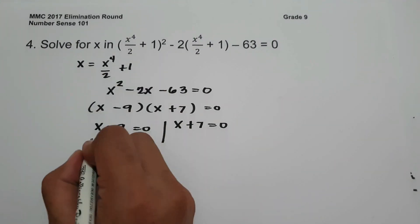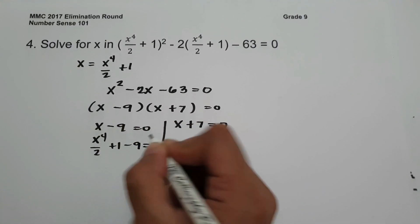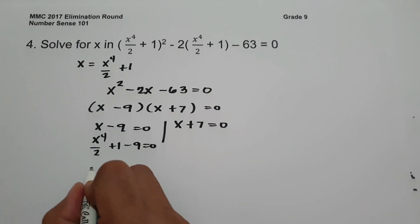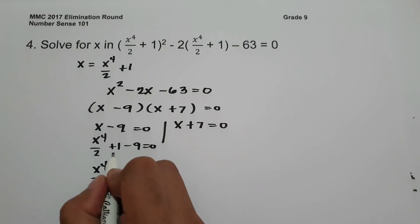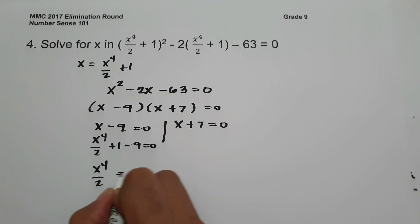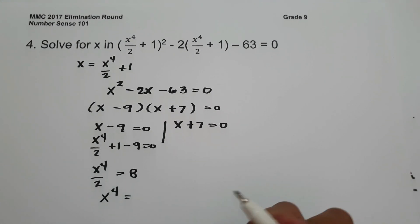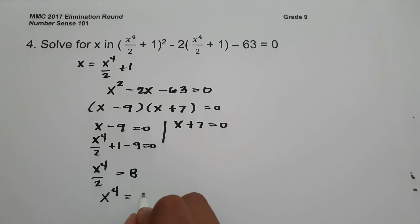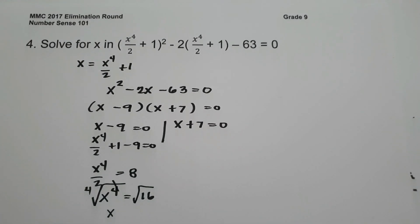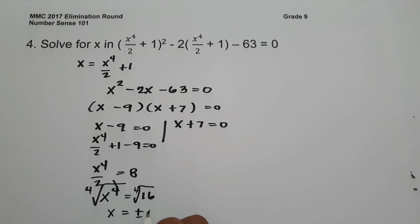Since x represents x raised to 4 over 2 plus 1, from x minus 9 equals 0, we have x raised to 4 over 2 plus 1 minus 9 equals 0. Simplifying: 1 minus 9 is negative 8, which moves to become positive 8. Multiplying both sides by 2 gives x raised to 4 equals 16. Taking the fourth root of 16 gives positive and negative 2.